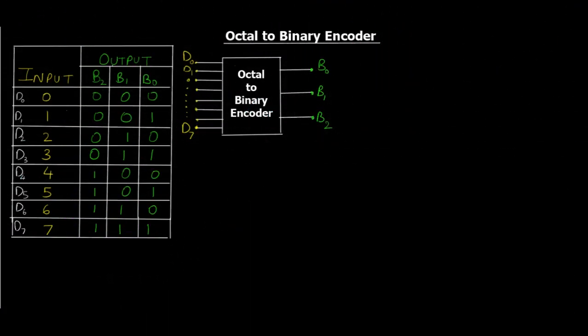In this video tutorial we'll discuss what Octal to Binary Encoder does. As the name suggests, it converts an octal number to a binary number. That's what encoders do - they transform one format to another format.